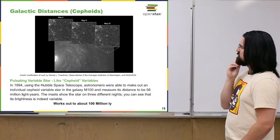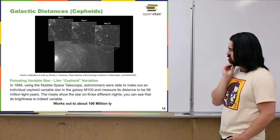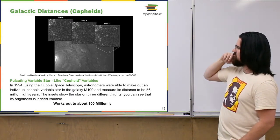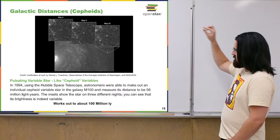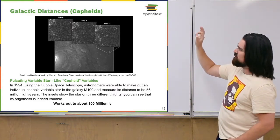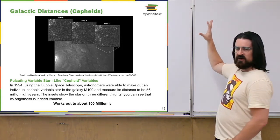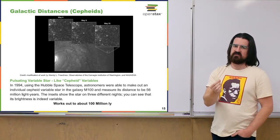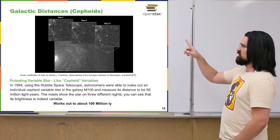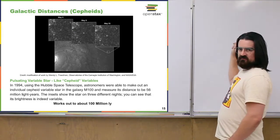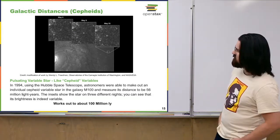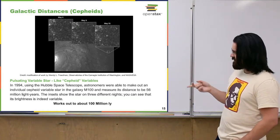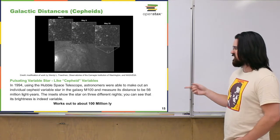Something interesting to look at is where these galaxies are in relation to us — how far away are they? One method I told you about is using pulsating variable stars, specifically Cepheid variables. The image here shows a Cepheid variable star in galaxy M100 being observed — it pulses from not very bright on May 4th, getting brighter by May 9th, quite bright by May 31st, then dimming again. The peak brightness is related to the period of the pulse, and using this we're able to estimate that M100 is about 56 million light-years away. This method allows us to measure things out to about 100 million light-years.